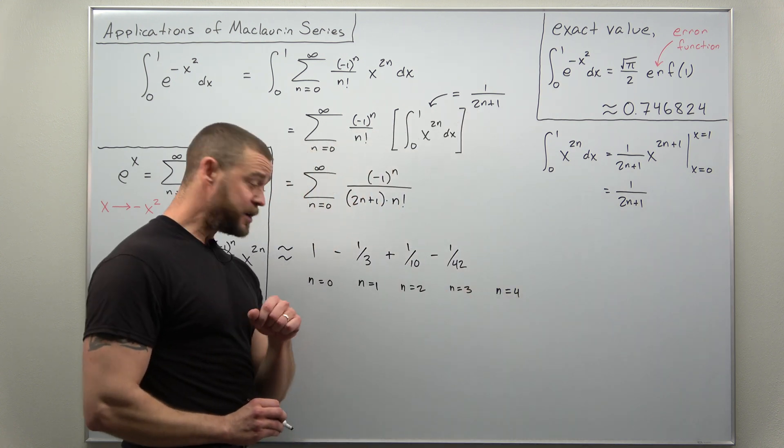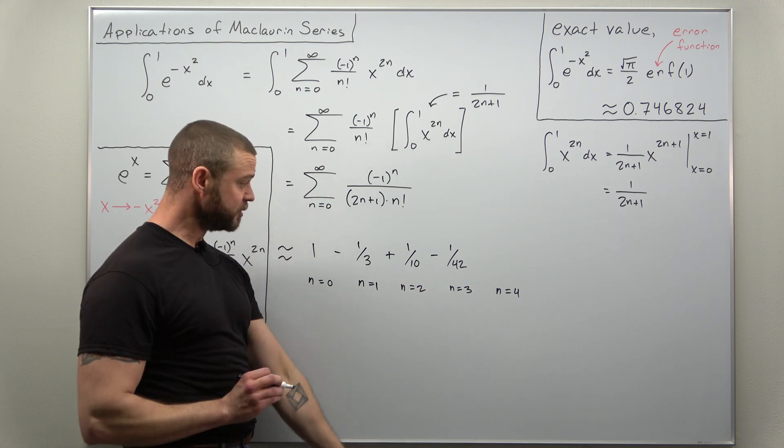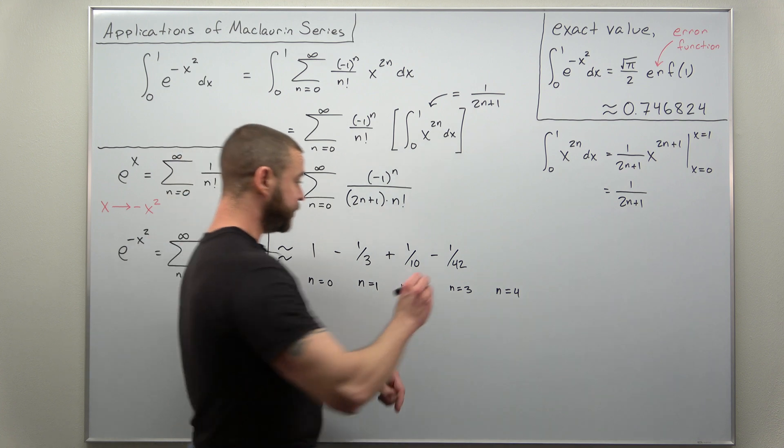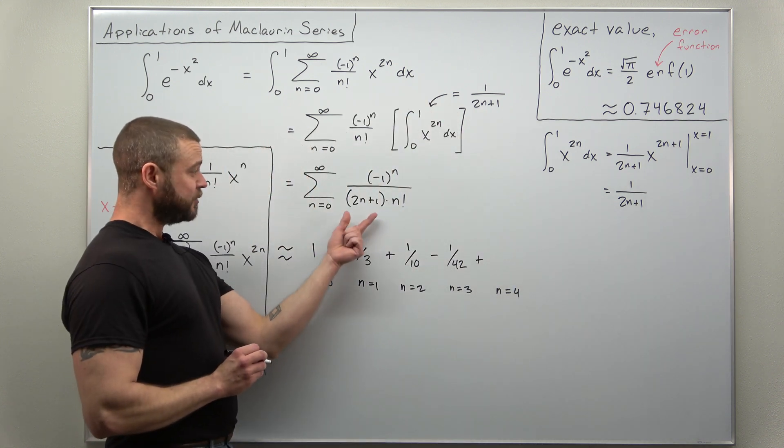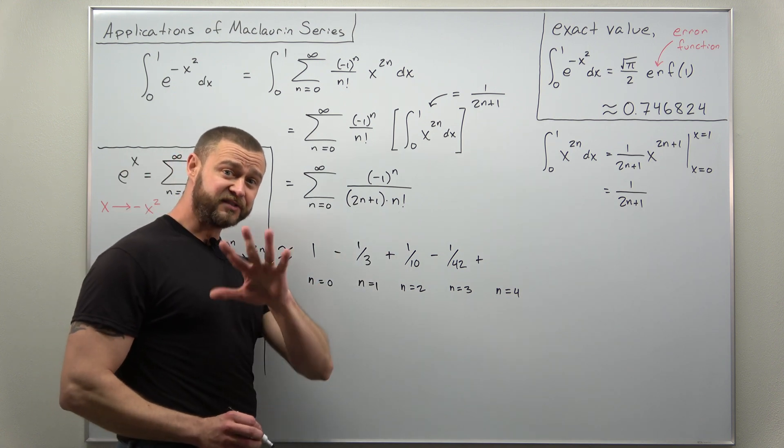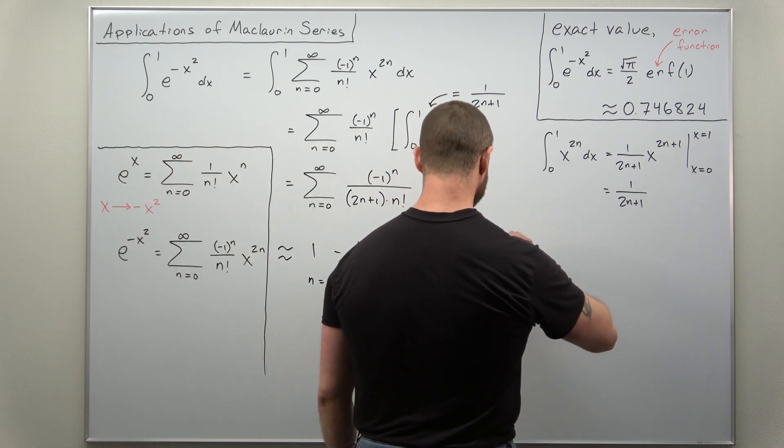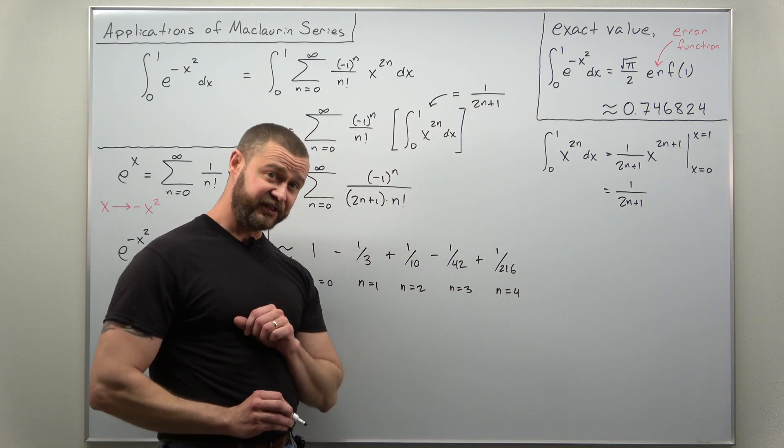And we'll go one more term to include five terms. This now ends with n equals 4 because we start with 0, so you have your first five terms. Looks like you're going to get now plus, and if you plug that in, looks like you're going to get 9 here times 4 factorial, and if you go ahead and simplify that you should get 1 divided by 216.